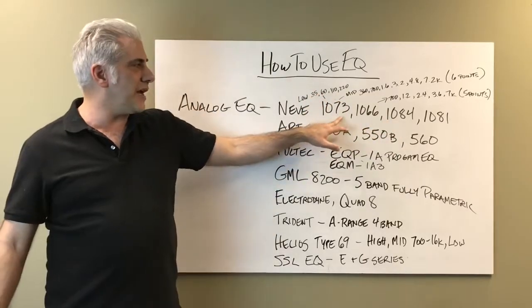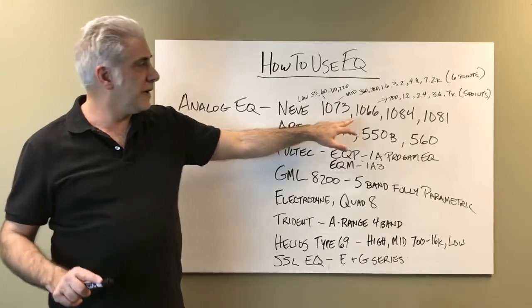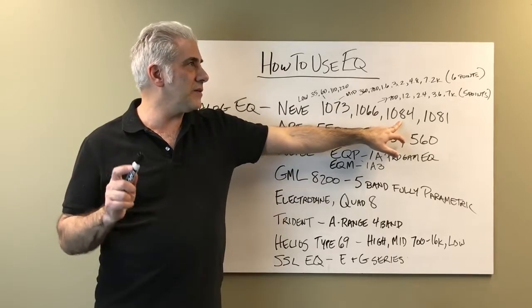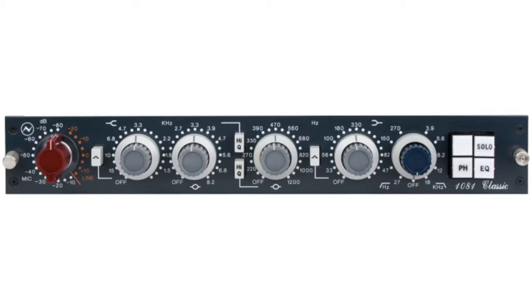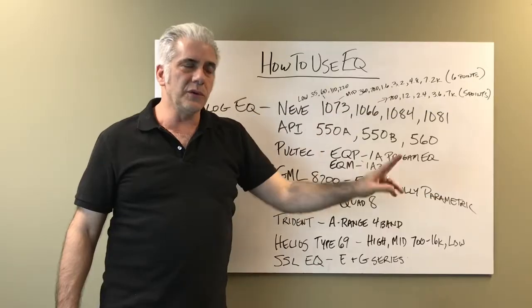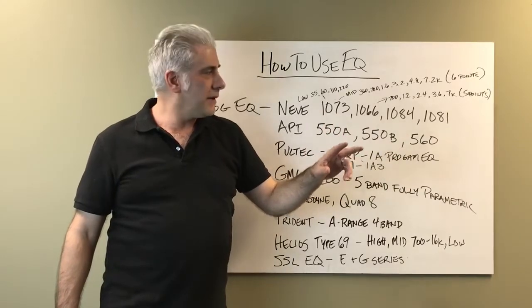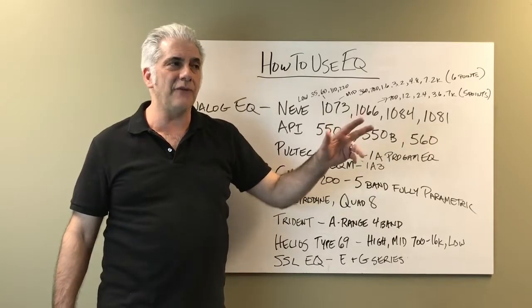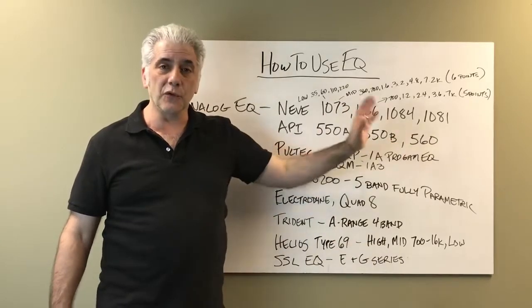The Neve 1084 is the same EQ as the 1073, but it has a 12k shelf. The 1066 has a 10k shelf. The 1084 has a switchable shelf — I believe 10, 12, and 16k switchable. The Neve 1081 mic pre EQ is much more versatile, with 10 bands of EQ across four separate sections: low end, low mid, upper mids, and top end — with 10 EQ points each. It also has a five-position high and low-pass filter. Really great sounding EQ.